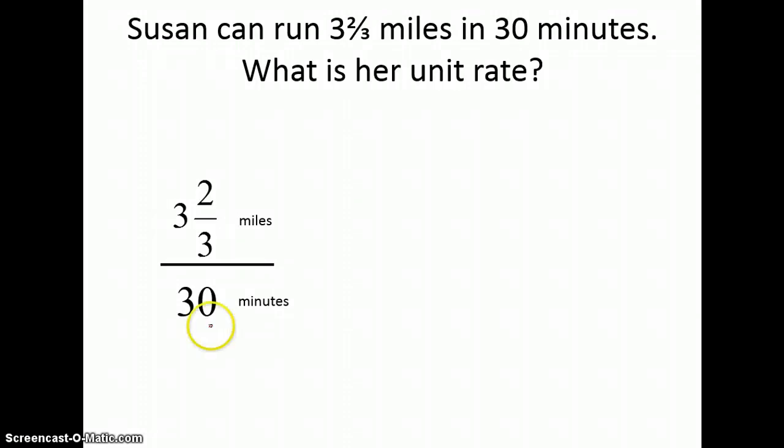Well, to do that, I need to make my denominator one. So, what do I need to do to 30 to get to one? Divide by 30. Or, multiply by 1 thirtieth.